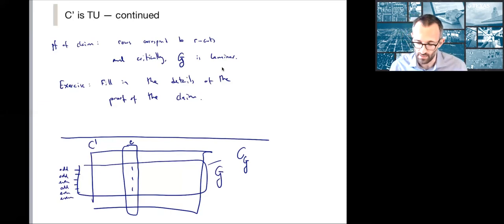This shows that C dash is totally unimodular, by one of the equivalences that we had said would be particularly important. We used it also for bipartite graphs when we were talking about characterizations of totally unimodular.